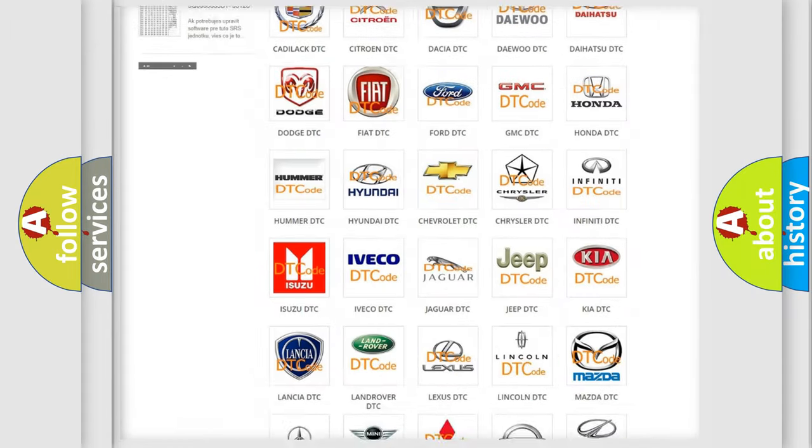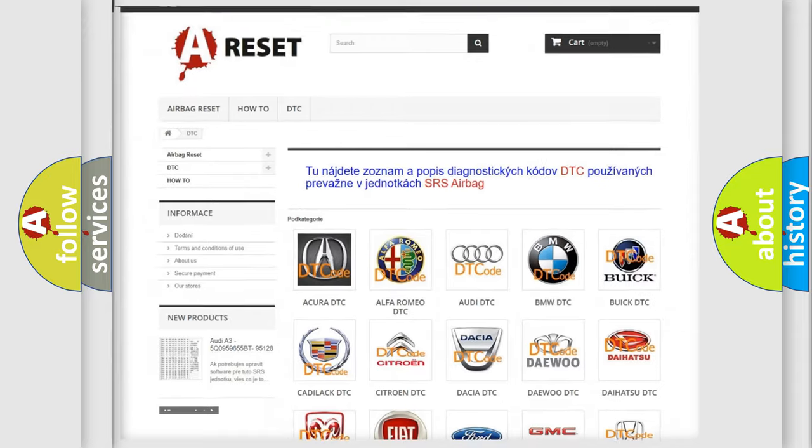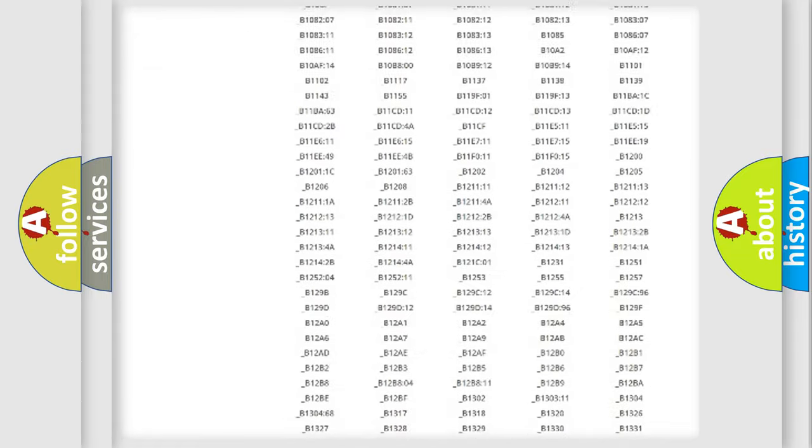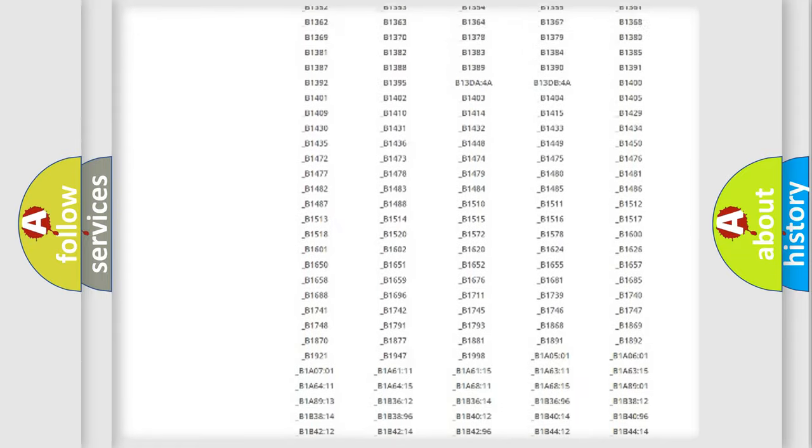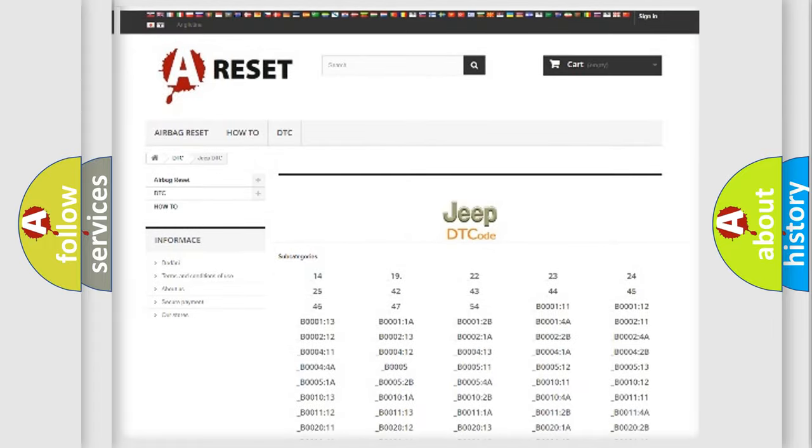Our website airbagreset.sk produces useful videos for you. You do not have to go through the OBD2 protocol anymore to know how to troubleshoot any car breakdown. You will find all the diagnostic codes that can be diagnosed in Jeep vehicles, and also many other useful things.